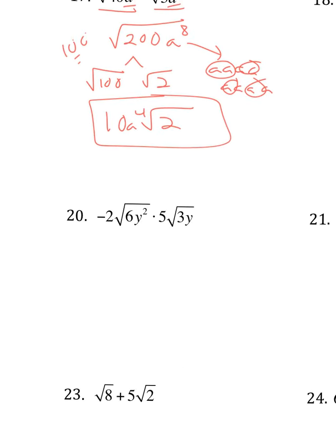20. Same kind of deal. Want to multiply numbers with numbers. Get negative 10. Radicals with radicals. That gives me 18y to the 3rd. Breakdown at the very end. Square root of 9, square root of 2.